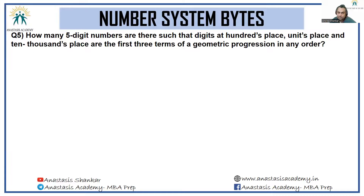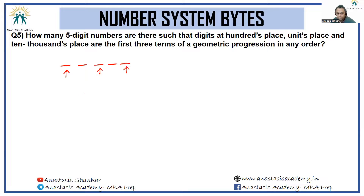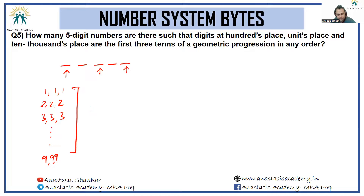Final problem: how many five-digit numbers have the digits at the hundreds, units, and ten-thousands place forming the first three terms of a geometric progression in any order? For constant-ratio GPs with equal digits (1,1,1), (2,2,2),...,(9,9,9) — 9 cases — each arranged in 1 way, with 10×10 choices for remaining digits: 900 numbers.